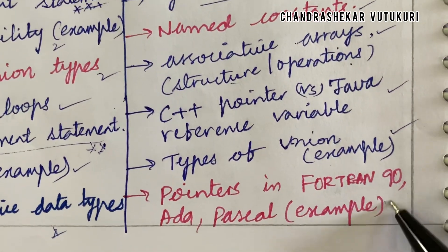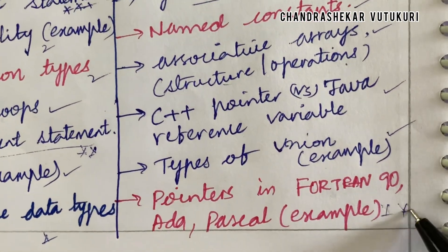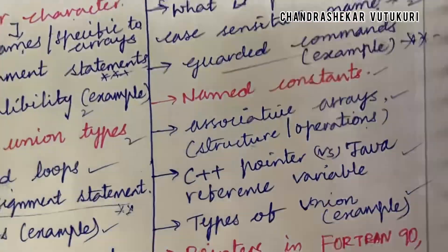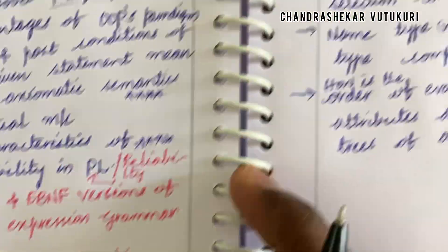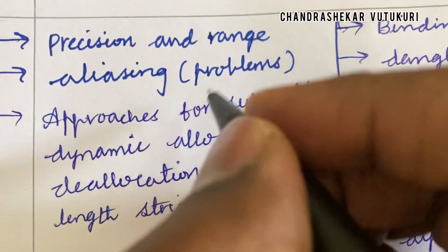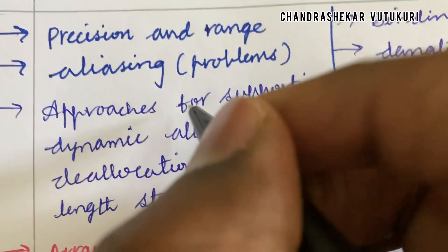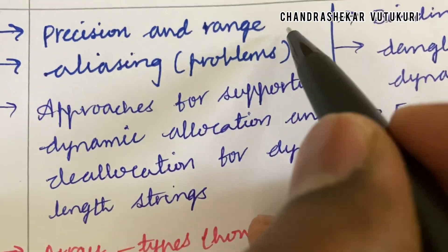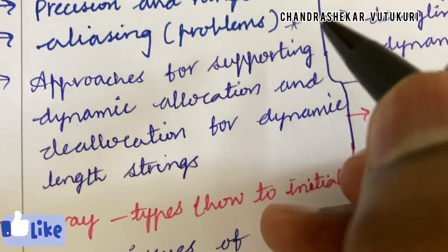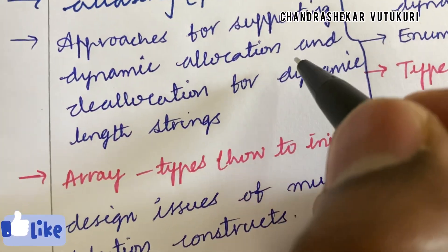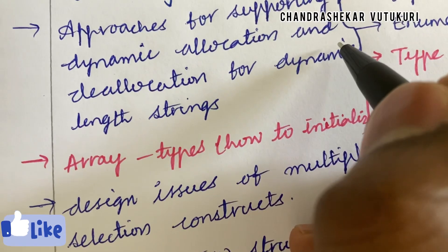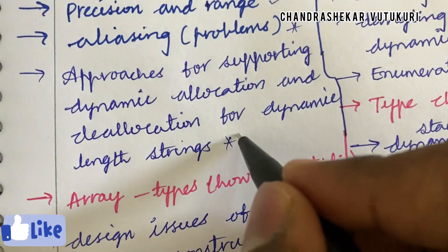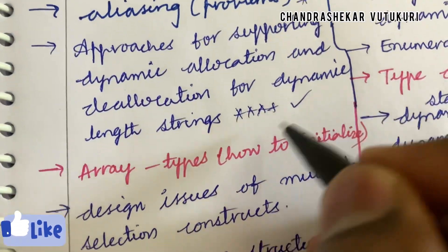Pointers in Fortran 90, Ada, and Pascal with examples is said to be a very important question. The course is too lengthy in structure and you are supposed to work out each and every parameter. Precision and range, analyzing problems and approaches for supporting dynamic allocation and deallocation for dynamic-length strings, is said to be a topmost question. Array types and how to initialize may be a short question.